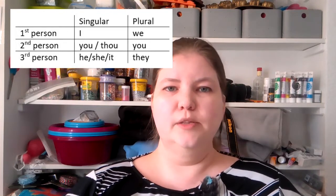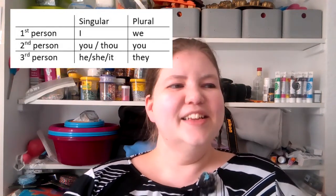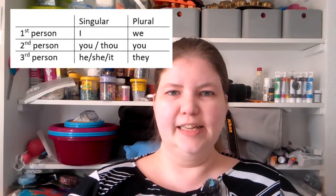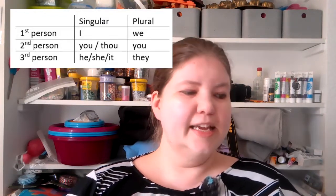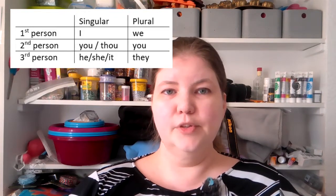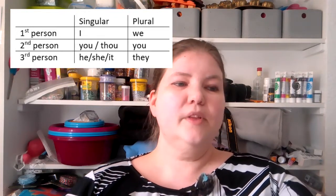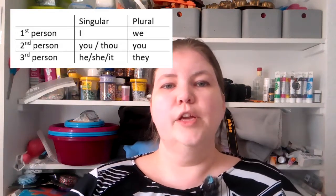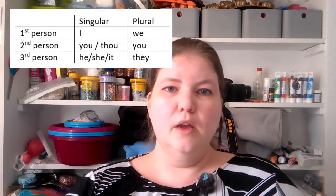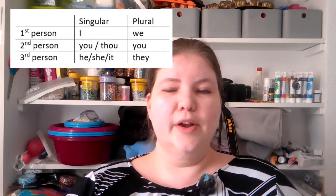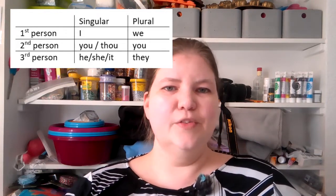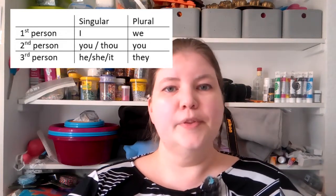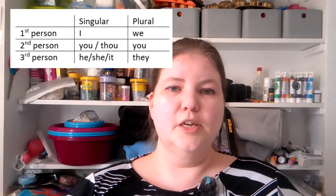Now let's get to the interesting ones — third person. Third person singular is he, she, it. He, referring to male. She, referring to female. And it, referring to objects. I'm going to reiterate that: he, referring to male; she, referring to female; it, referring to objects.